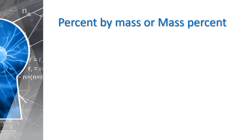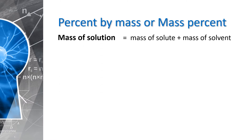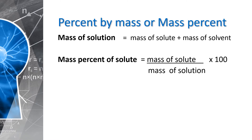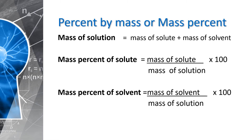We also have helpful equations for percent by mass or mass percent. The mass of solution is equal to the mass of solute plus the mass of solvent. The mass percent of solute equals mass of solute divided by mass of solution times 100. For mass percent of solvent, the formula is mass of solvent divided by mass of solution times 100. Again, notice the denominator — it is always the mass of solution. The numerator can be solute or solvent, but the denominator should always be solution times 100 to get the correct answer.